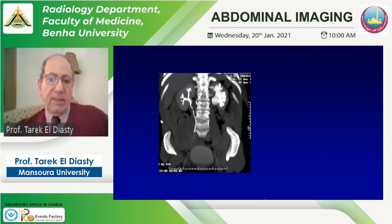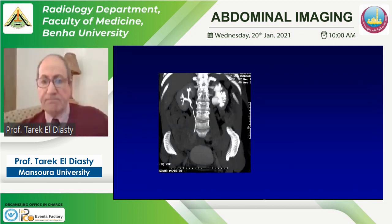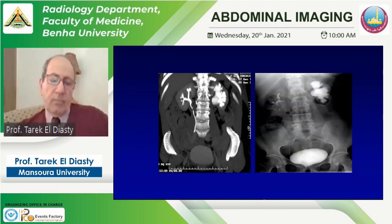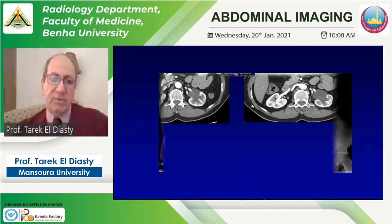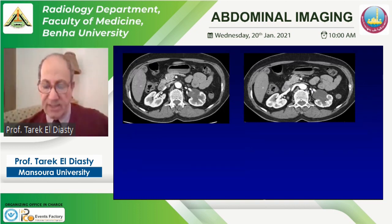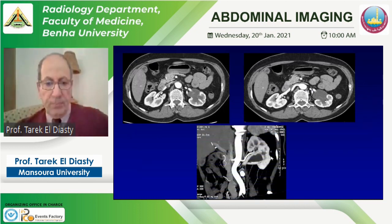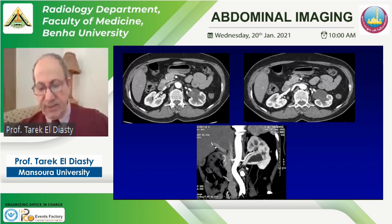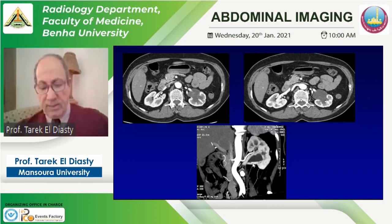In a case of left ureteropelvic junction obstruction on CT urography — similar findings to IVU — CT adds value by assessing for a crossing vessel at the UPJ. Here, a crossing vein at the ureteropelvic junction is identified. This affects management: if a crossing vessel is present, the patient should be managed by open pyeloplasty rather than endoscopic pyeloplasty.